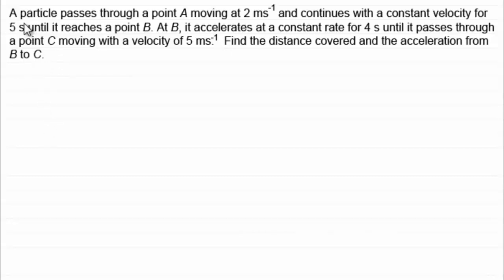And with this question we've got a particle passes through a point A moving at 2 metres per second and continues with a constant velocity for 5 seconds until it reaches a point B. And at B it accelerates at a constant rate for 4 seconds until it passes through a point C, moving with a velocity of 5 metres per second. And what we've got to do is find the distance covered and the acceleration from B to C.